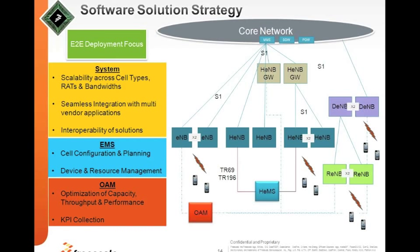Seamless integration means multi-vendor applications: there could be a vendor designing the home eNodeB, another designing the baseband, the stack done by a different vendor, and home eNodeB gateways and security gateways by yet others. All these elements have interfaces like S1 and FAPI that need to be worked through for interoperability. Management is extremely important because as more access points and small cells get deployed, management becomes critical.